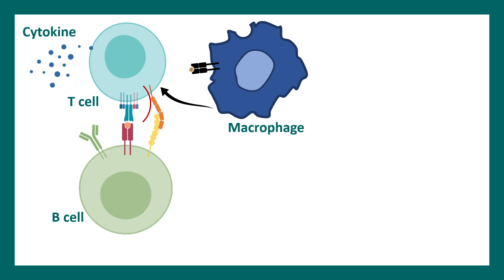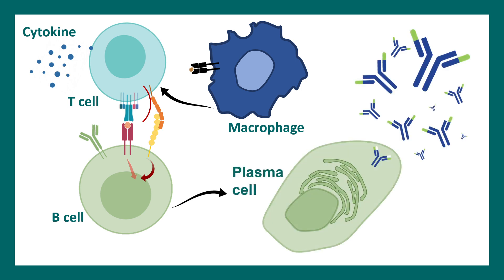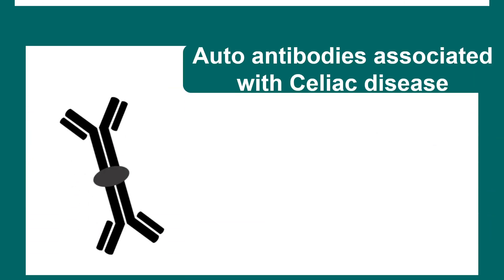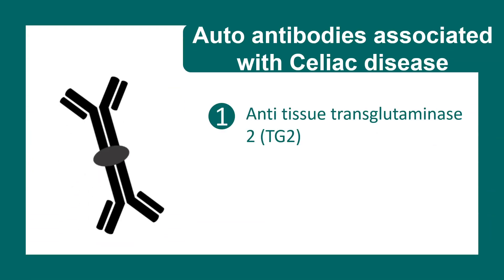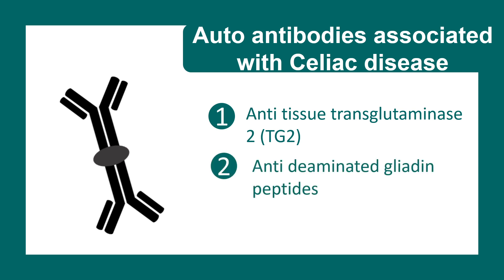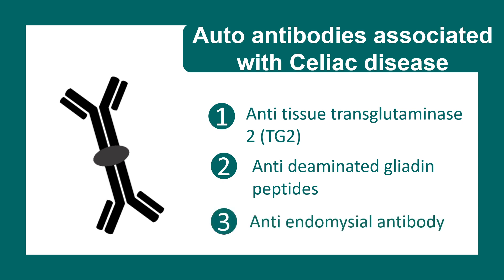Also, it can activate B cells, which eventually get differentiated into plasma cells. These plasma cells secrete several antibodies which bring out the immune response against your intestinal wall. These antibodies include anti-tissue transglutaminase 2 antibody, or TG2 antibody, which is also a biomarker for diagnosing this disease. Anti-deaminated gliadin peptides are also present, and anti-endomysial antibody is present in this disease as well.